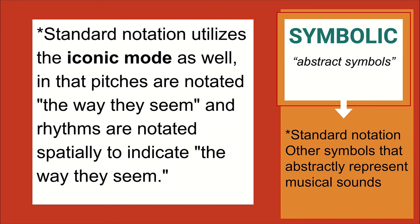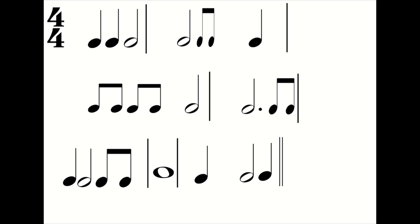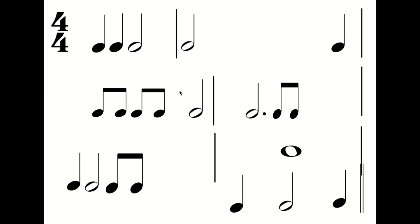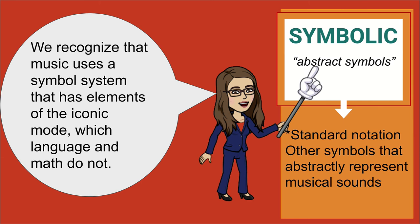As we have seen, standard notation utilizes the iconic mode as well — pitches are notated the way they seem, and rhythms are notated spatially to indicate their durations as they sound. For example, when the distance between rhythms doesn't reflect the durations as they sound, it makes it very hard to read. In applying Bruner's theory, we will consider all standard notation and stick notation to be at the symbolic level of understanding, while recognizing that music uses a symbol system that has elements of the iconic mode, which language and math do not.